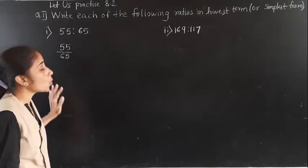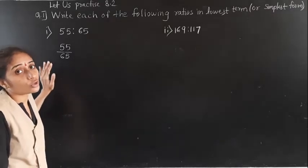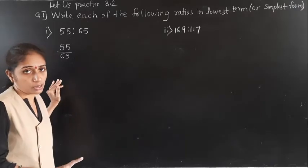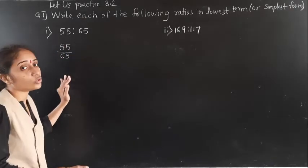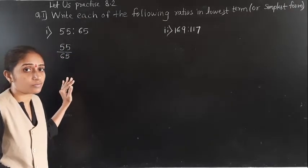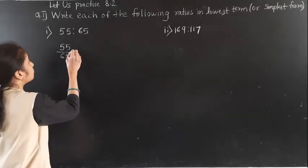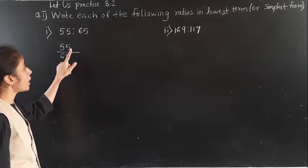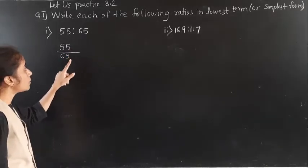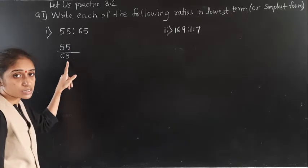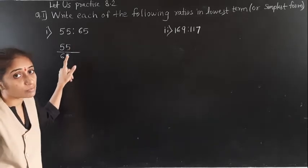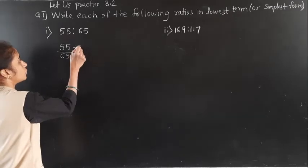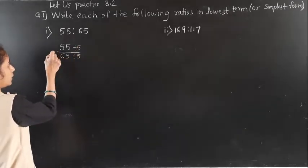To do the lowest term, what we have to do? We have to divide the numerator as well as denominator by the same number. Start observing the numbers. Both numbers end in 5, so both are divisible by 5. So you can divide by 5, and you can write the answer directly.